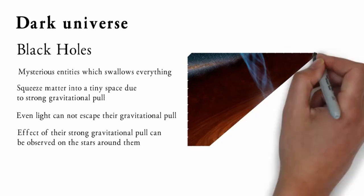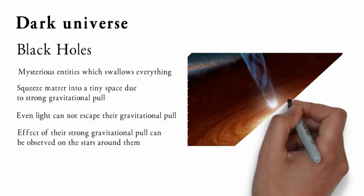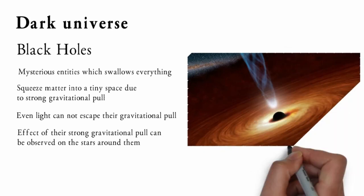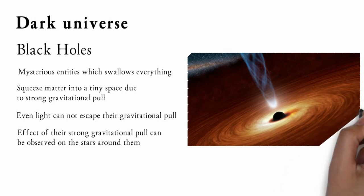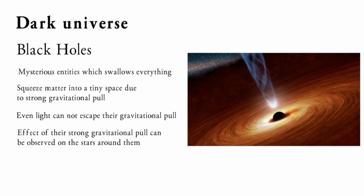Black holes are formed when massive stars, which are about five times the mass of the Sun, collapse upon themselves under the influence of gravity. The outer layers of these massive stars explode with a massive explosion called a supernova, whereas their core implodes onto itself due to gravity and is turned into a black hole.